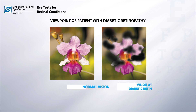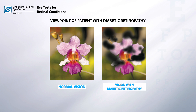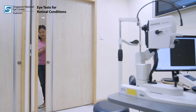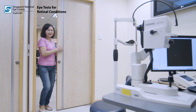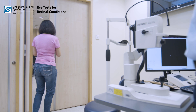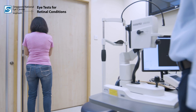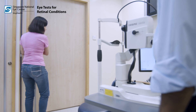Diabetic retinopathy is a disorder of the blood vessels in the retina of patients with diabetes. Retinal detachment occurs when the retina separates from the outer layer of the eye.